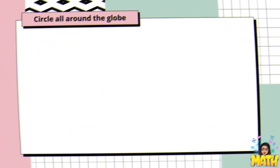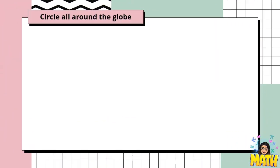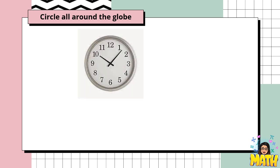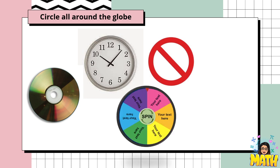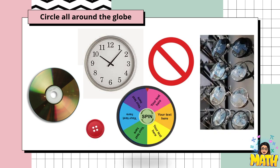Since we're talking about circles, there are many things around the globe that are circular in shape, such as wall clock, compact disc, traffic signs, spinning wheel, buttons, and eyeglasses. So most of these are in circular shape.